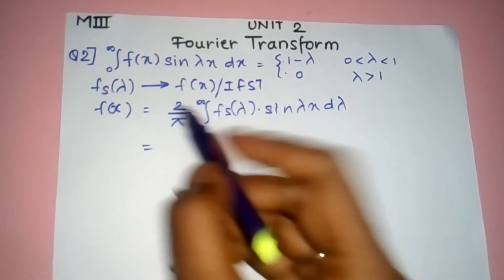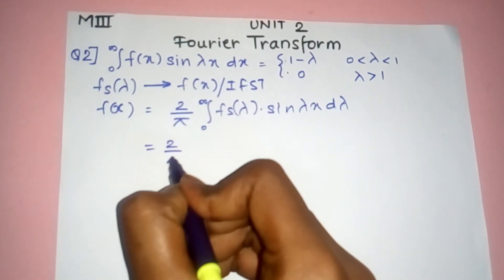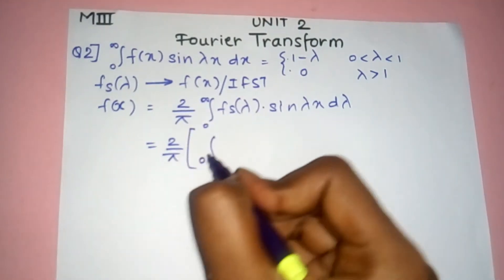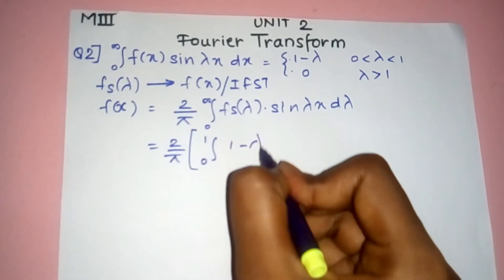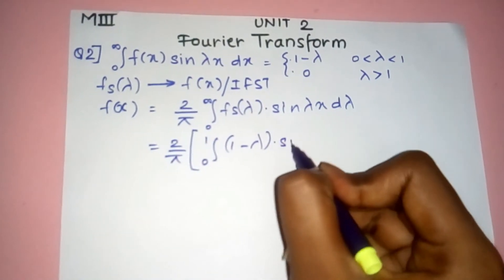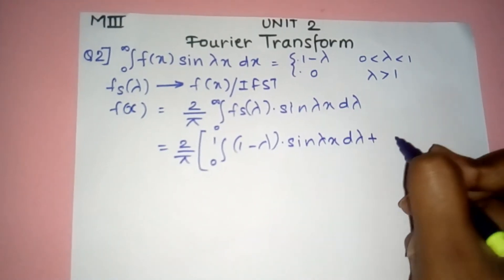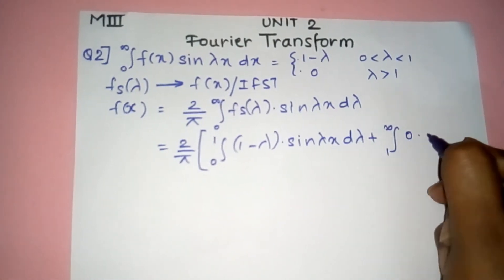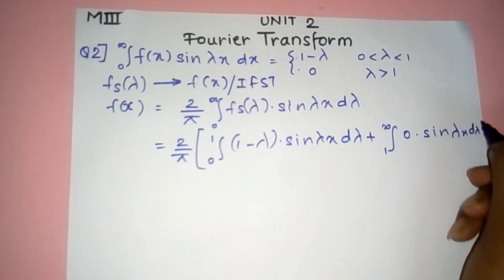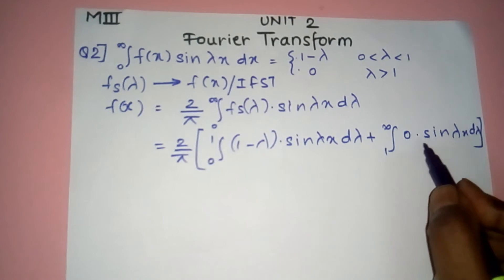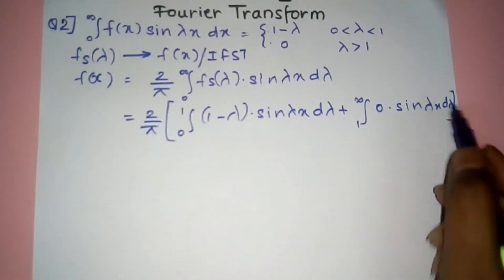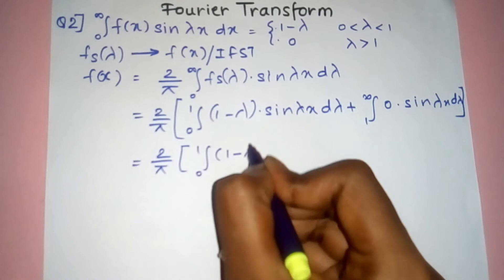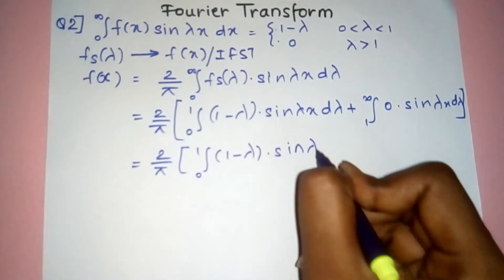We add both contributions. Keeping (2/π) outside: (2/π) [ ∫₀¹ (1 − λ) sin(λx) dλ + ∫₁^∞ 0 · sin(λx) dλ ]. Now 0 times sine becomes 0, so the entire second part cancels. What remains is (2/π) ∫₀¹ (1 − λ) sin(λx) dλ.